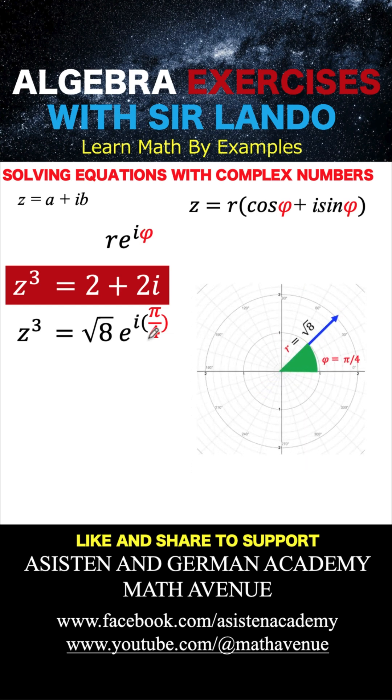Now, notice that if I have this polar coordinate system, this point, which has a radius of square root of 8 and an angle of pi over 4, can also be arrived at if I rotate around the circle an additional of 360 degrees or 2 pi, and if I keep rotating around the circle for an additional of 2 pi. So there could be an infinite number of solutions to this equation. One of them could be z cubed equals the square root of 8 e to the i pi over 4 plus 2 pi.